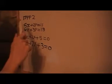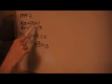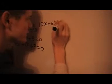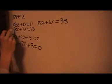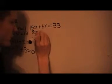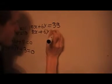What I'm going to do here is I'm going to multiply the top equation by 3. I'm going to get 15x plus 6y, that is equal to 33. And the bottom one, I'm going to multiply that by 2. I'm going to get 8x plus 6y is equal to 26.